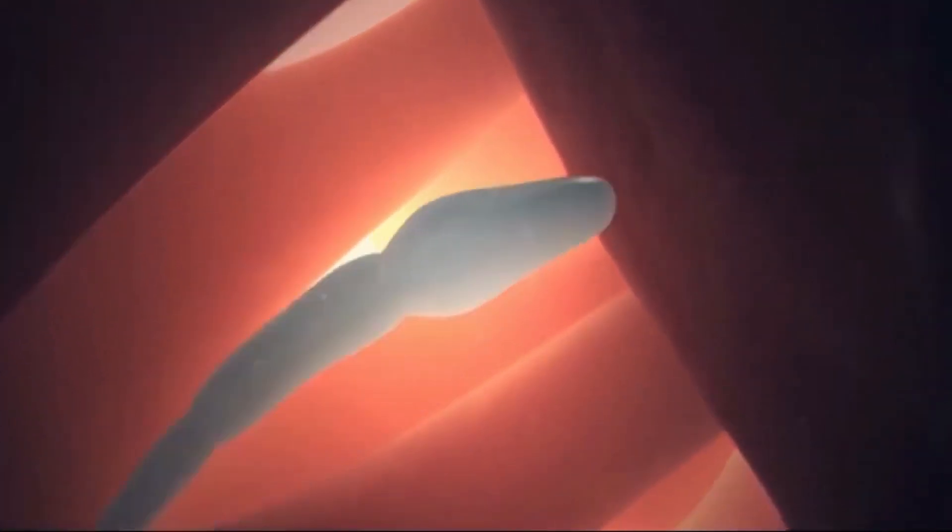The first sperm to make contact will fertilize the egg. After a perilous journey and against incredible odds, a single sperm attaches to the egg cell membrane. Within a few minutes, their outer membranes fuse and the egg pulls the sperm inside. This event causes changes in the egg membrane that prevent other sperm from attaching to it.